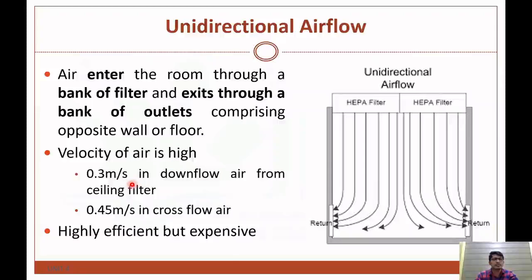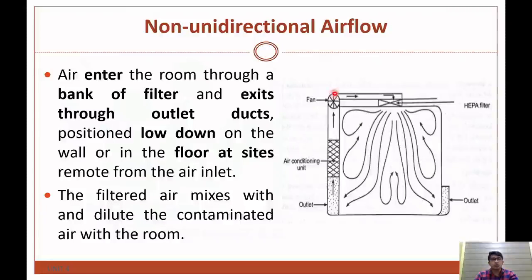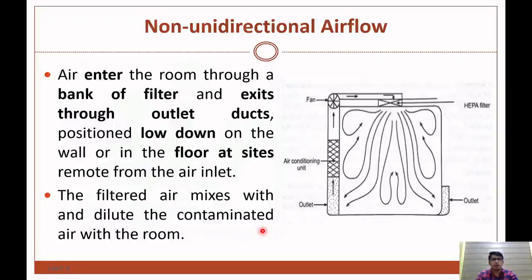The velocity of air in unidirectional flow is 0.3 meters per second in the downflow from the ceiling filter and 0.45 meters per second in the crossflow. This system is highly efficient but expensive. In non-unidirectional flow, air enters through a bank of filters and exits through outlet ducts positioned on the wall or floor at the side removed from the air inlet. The filtered air mixes with and dilutes the contaminating air within the room, which is the main problem with non-unidirectional air flow.